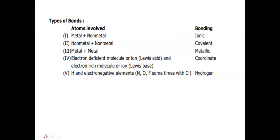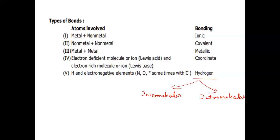I will explain hydrogen bonding here because it is a very simple topic. Hydrogen bonding is further classified into two types: intermolecular hydrogen bonding and intramolecular hydrogen bonding. Intermolecular hydrogen bonding means the hydrogen bonding is present in between any two molecules.